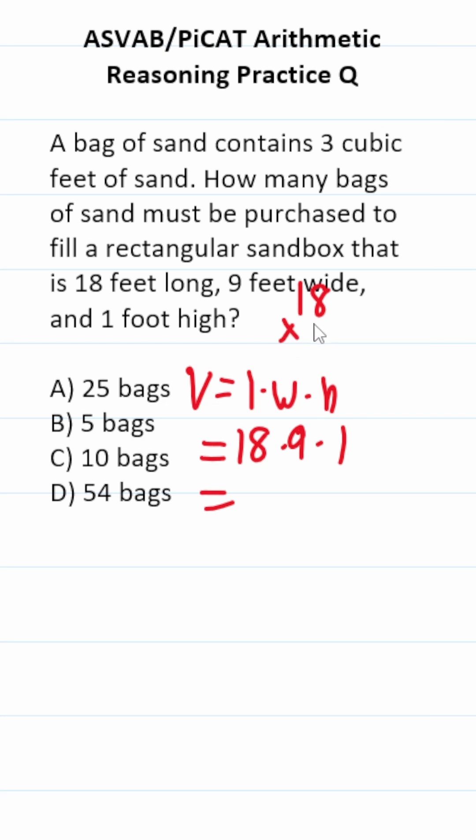If you can't do 18 times 9 mentally, there's no shame in that. Do it off to the side. 8 times 9 is 72. Carry a 7. 9 times 1 is 9, plus 7 is 162.